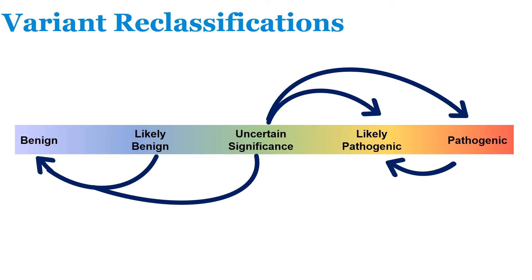As more information becomes available for variants, their classifications can change. Over time, as evidence becomes available, laboratories may learn more about a variant that downgrades it to benign-likely benign or upgrades it to pathogenic-likely pathogenic. While the hope is to better understand VUS, our understanding of variants in any of these categories may change over time as laboratories learn more information.